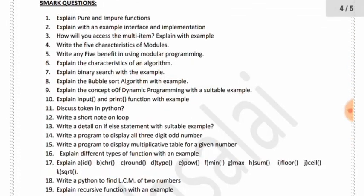Let's see if it's 5 — Pure and Impure Function, Interface and Implementation, Multi-Item. Let's see if we have two questions: Pure and Impure Function, Interface and Implementation — I can't say anything about them.